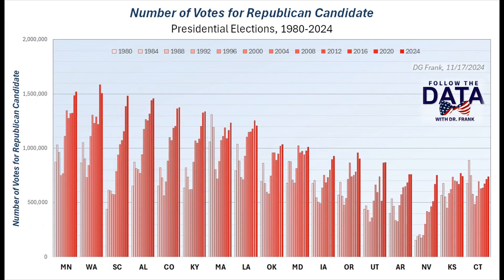Here is the next set of 17 states, with the scale zoomed in about threefold. Again, the trends in Republican candidate votes are generally increasing, with the recent exception of Mississippi, West Virginia, Hawaii, Wyoming, and Arkansas.